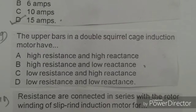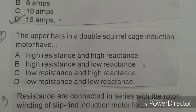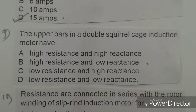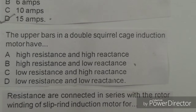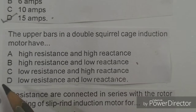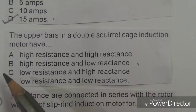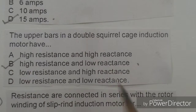Next objective: The upper bar in the double squirrel cage induction motor has. Options given: high resistance and high reactance, high resistance and low reactance, low resistance and high reactance, low resistance and low reactance. The right answer is B, high resistance and low reactance. Mark here.